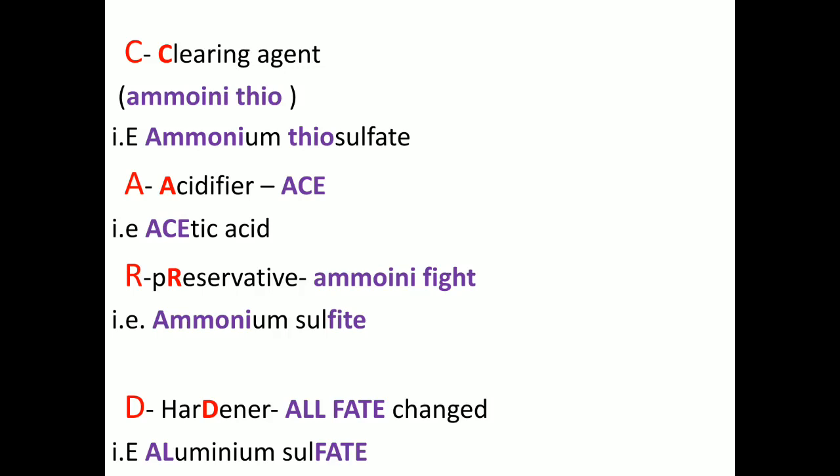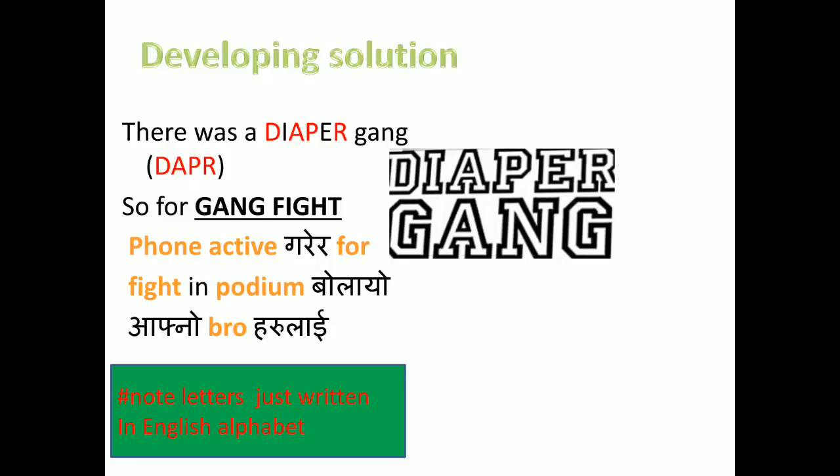R stands for preservative: in the mnemonic 'Amini fight', 'Amini' is ammonium and 'fight' represents sulfite — so ammonium sulfite is the preservative. Similarly, preservative is also in its reduced form. Finally, D stands for hardener: 'all fate gets changed' — 'all' stands for ammonium, 'fate' stands for sulfate, so ammonium sulfate is the example of hardener.